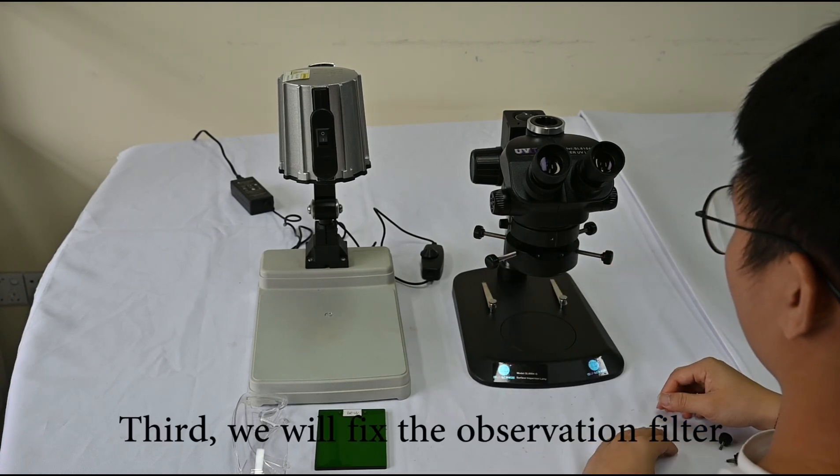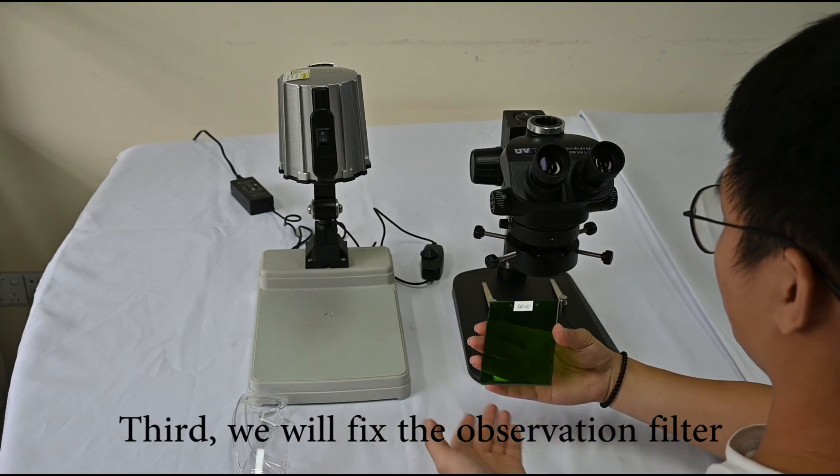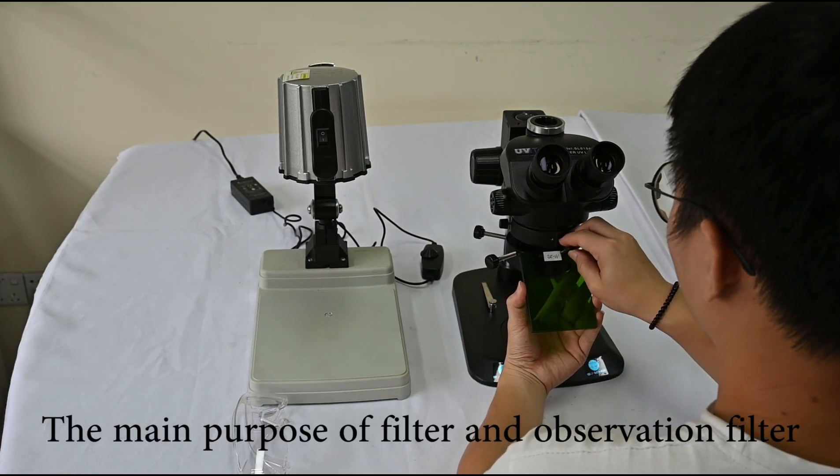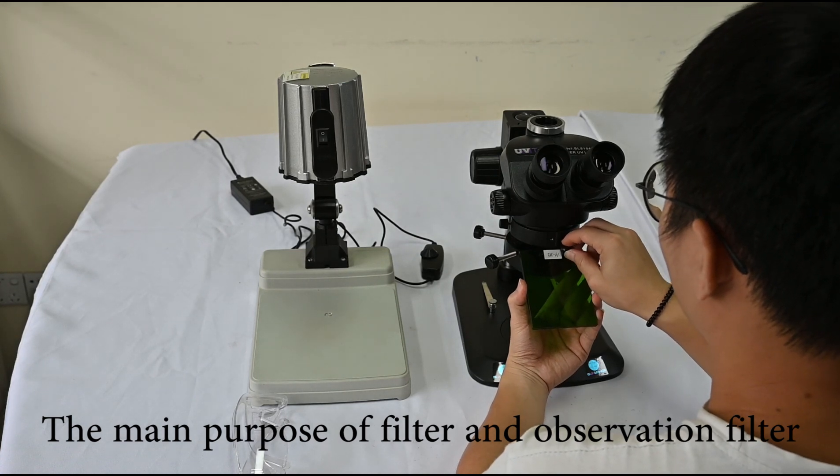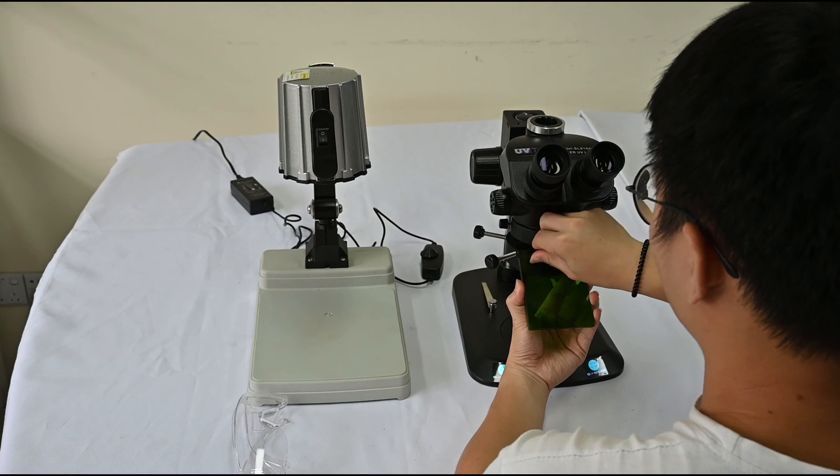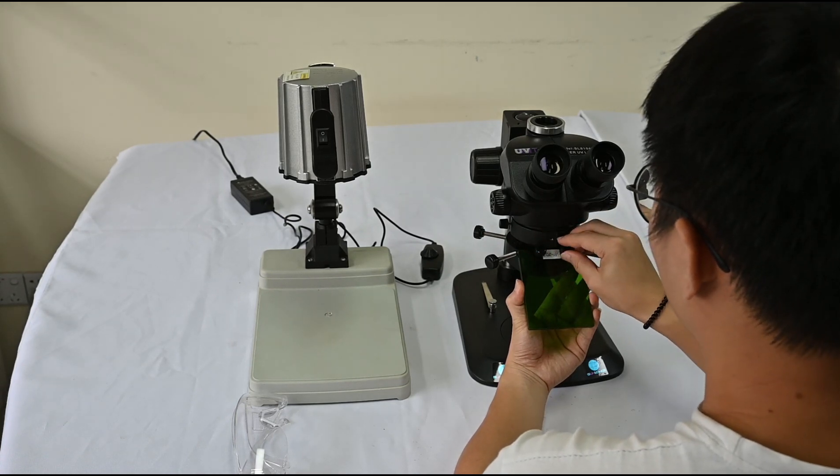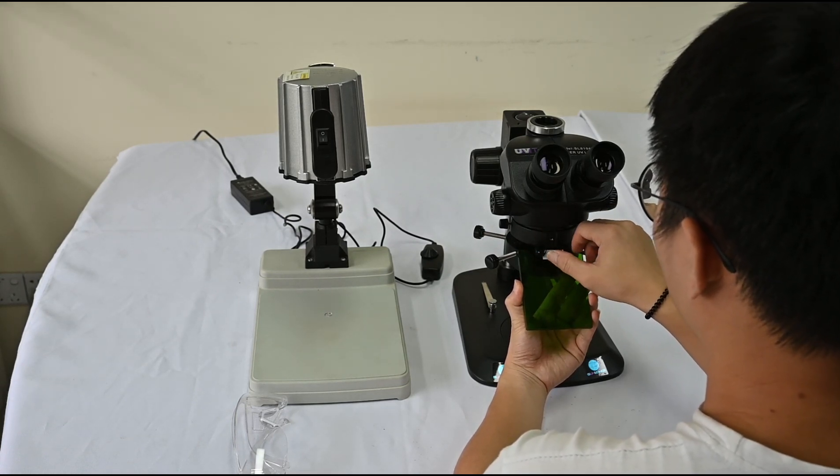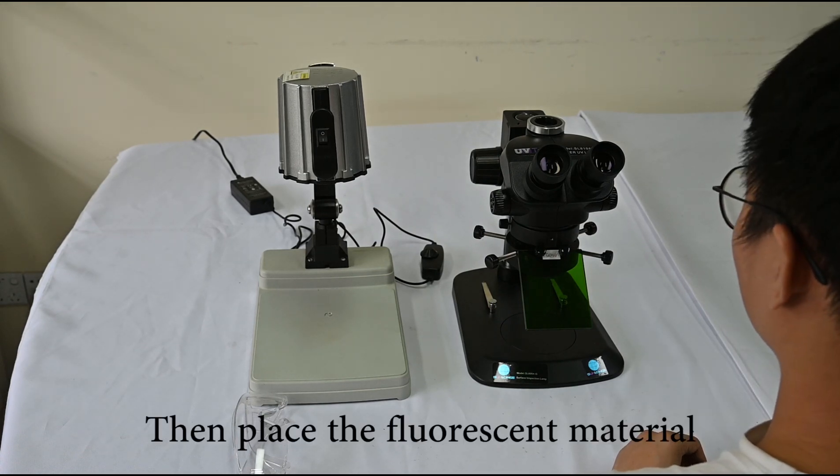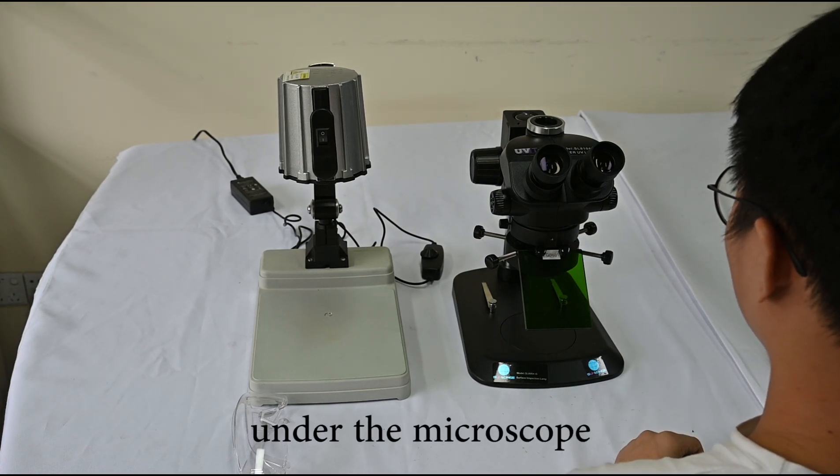Third, we will fix the observation filter. The main purpose of the filter and the observation filter is to block the stray light. Then, place the fluorescent material under the microscope.